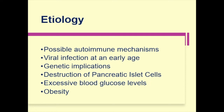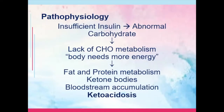You also have the destruction of your pancreatic islet cells. Remember, it is the islet cells — the islet of Langerhans — that produce your insulin. With the destruction of these cells, which may be brought about by side effects of chemotherapy or excessive use of alcohol, your patient is more likely to develop insulin resistance. Then, excessive blood glucose levels related to your diet is perhaps the most significant modifiable risk factor, and then your obesity.